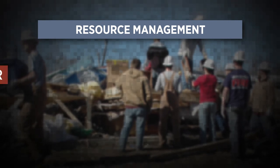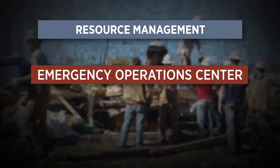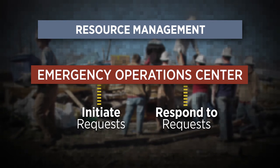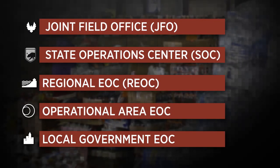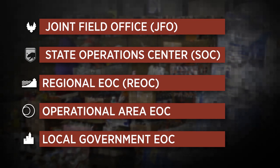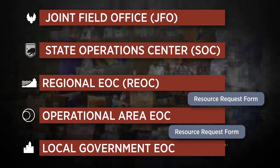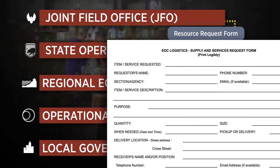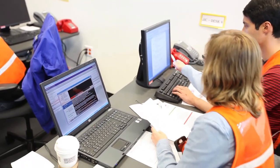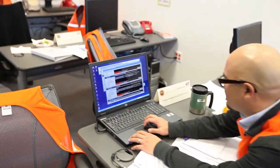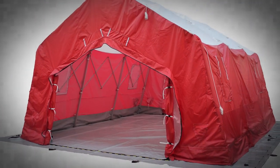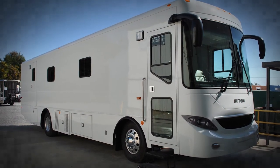Resource management involves brokering various types of requests that go both directions. It is likely that you will make requests to other levels of government and also respond to requests that you receive. It is your responsibility to fulfill submitted resource requests using resources within your jurisdiction first. If resources are not available, you may complete and submit an EOC resource request form to the next higher level of government. Ask your section chief how to access your EOC's resource request form. Be aware that resource requests and other forms may be prepared electronically using a software tool such as WebEOC if available. The private sector also plays a critical role in the offering of supplies, equipment, personnel, facilities, recovery, and transportation.